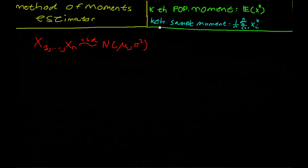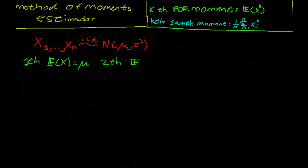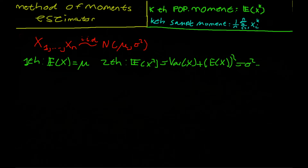Let's calculate the first and second population moment. The first population moment is equal to the expected value of x raised to the power 1, which is just x. When x follows a normal distribution, the expected value of x equals mu. For the second moment, we calculate the expected value of x squared, which equals the variance of x plus the expected value of x squared — that is, sigma squared plus mu squared.